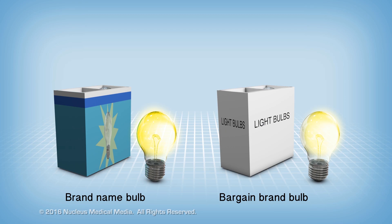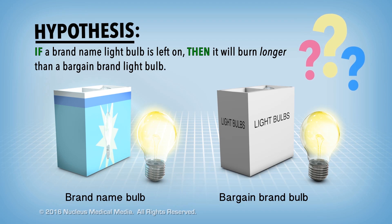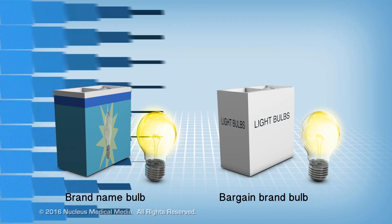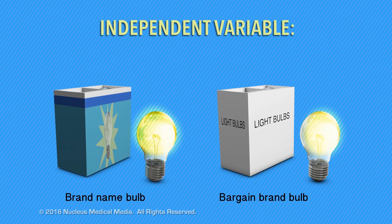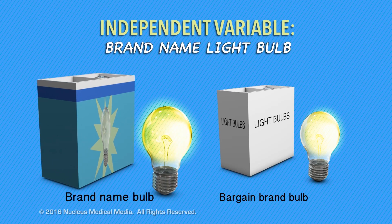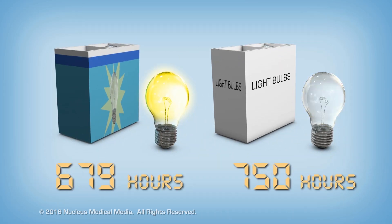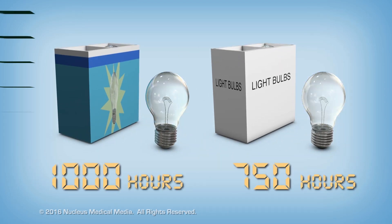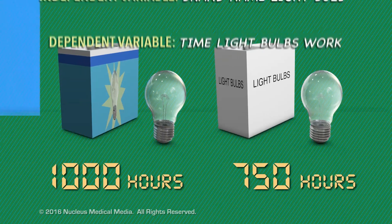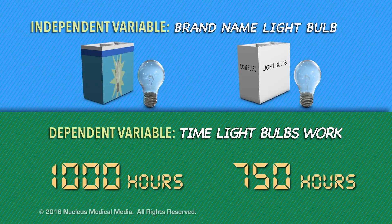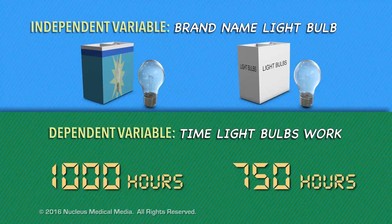Here's a final example. You predict that if a brand name light bulb is left on continuously, then it will burn longer than a bargain brand light bulb used in the same manner. In this case, the independent variable is the brand name light bulb. What are you measuring? You're measuring how many hours the light bulbs work before burning out, which is the dependent variable.